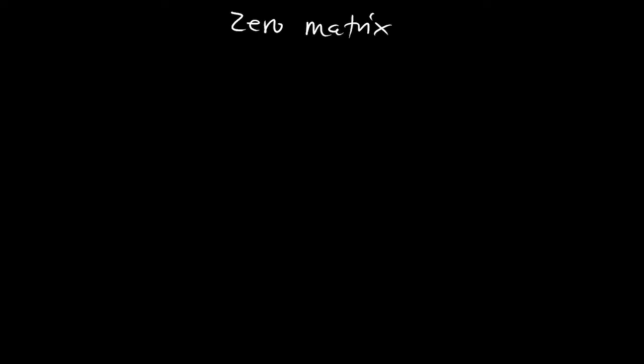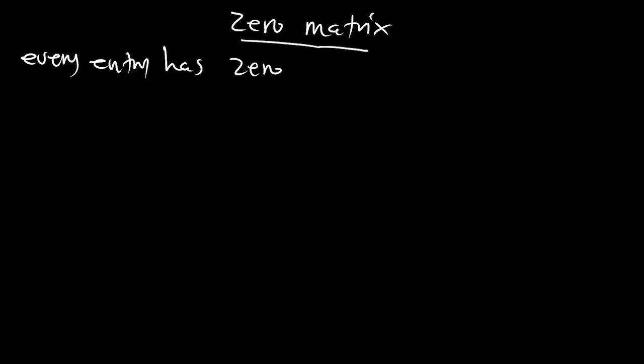The last thing we'll be looking at is what we call a zero matrix. When do we say a matrix is a zero matrix? A matrix is said to be zero if it has a zero entry at every point. Every entry has zero. Such a matrix is said to be a zero matrix.